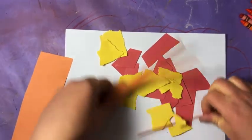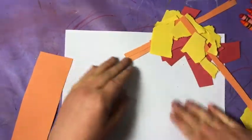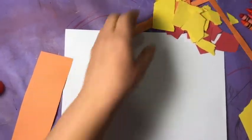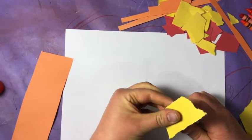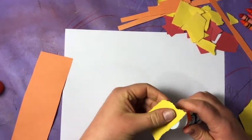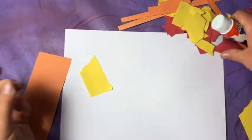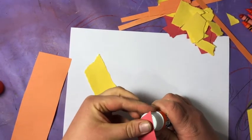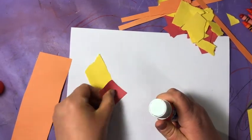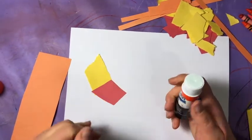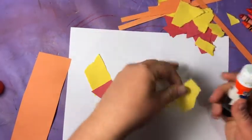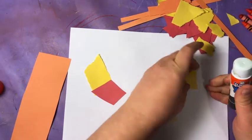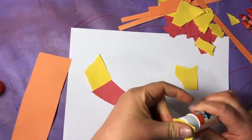All right, so once you have a bunch of these pieces of paper, I'm going to move them aside. I'm going to take my glue stick and just start gluing them down and arranging them how I would like on my paper. And again, it's abstract, so it doesn't have to look like anything.